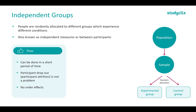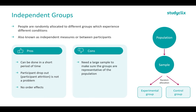Now the cons: we need a large sample size to make sure the groups are representative of the population. We need a relatively large sample to be able to split them so that both the control group and experimental group are representative of the population and our results can be generalized. We also have less control over variables compared to other study designs. Due to random allocation, there is no certainty that both groups will be equal in participant variables — one group may be smarter than the other, which could influence our design in unpredictable ways.